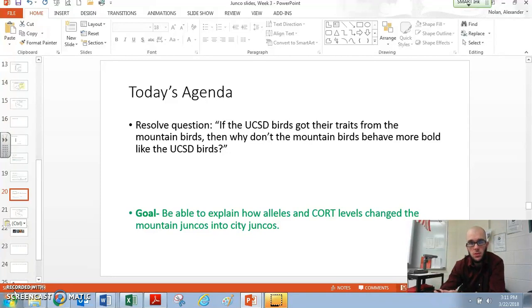We're looking at our juncos and we find that the UCSD birds are bolder than their mountain cousins, but the mountain birds are really the source of that original population. That's where the UCSD birds came from. So the question is, if the UCSD birds got their traits from the mountain birds, then why don't the mountain birds behave more bold like the UCSD birds? If those traits came over from the mountains, why don't we see that in the mountain birds?